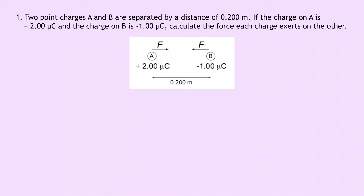So let's get started. Question 1 says that two point charges A and B are separated by a distance of 0.2 metres. If the charge on A is plus 2 microcoulombs and the charge on B is minus 1 microcoulombs, calculate the force each charge exerts on the other. Remember the force for Coulomb's inverse square law is a mutual force, which means that the force that A exerts on B will be the same in magnitude as the force that B exerts on A, but just in the opposite direction.